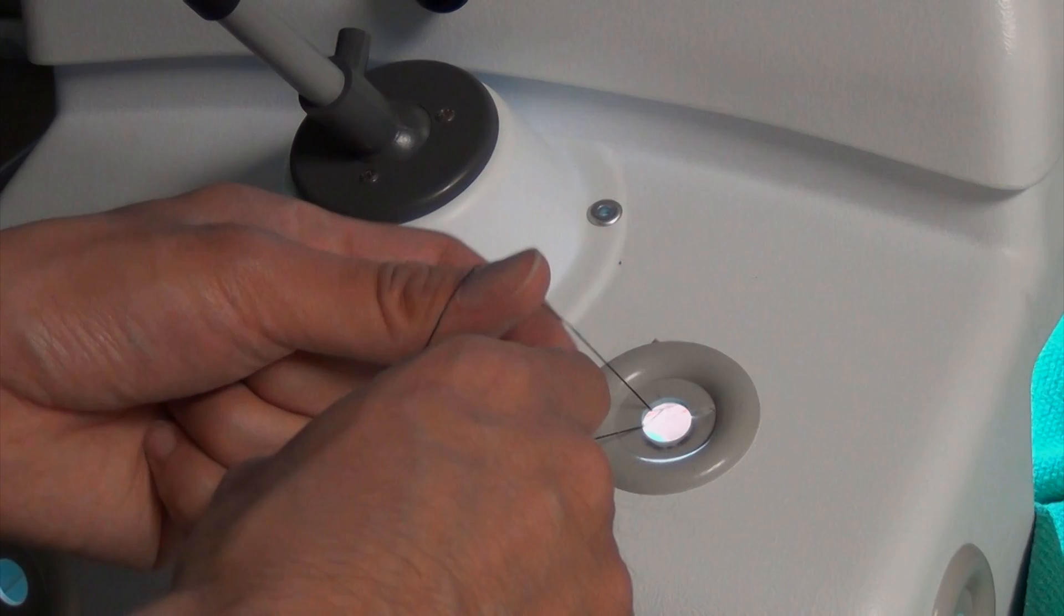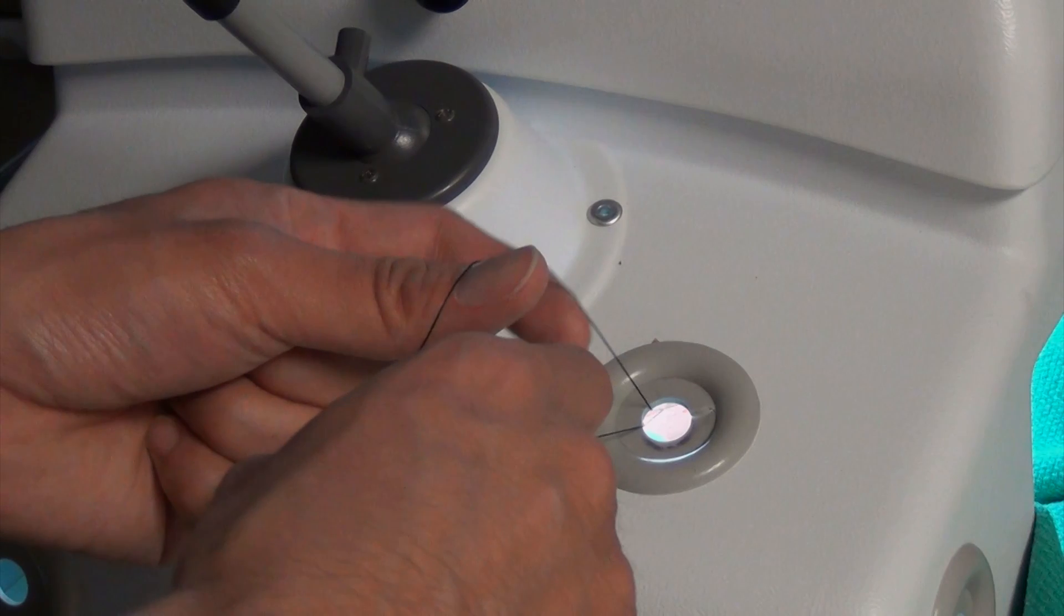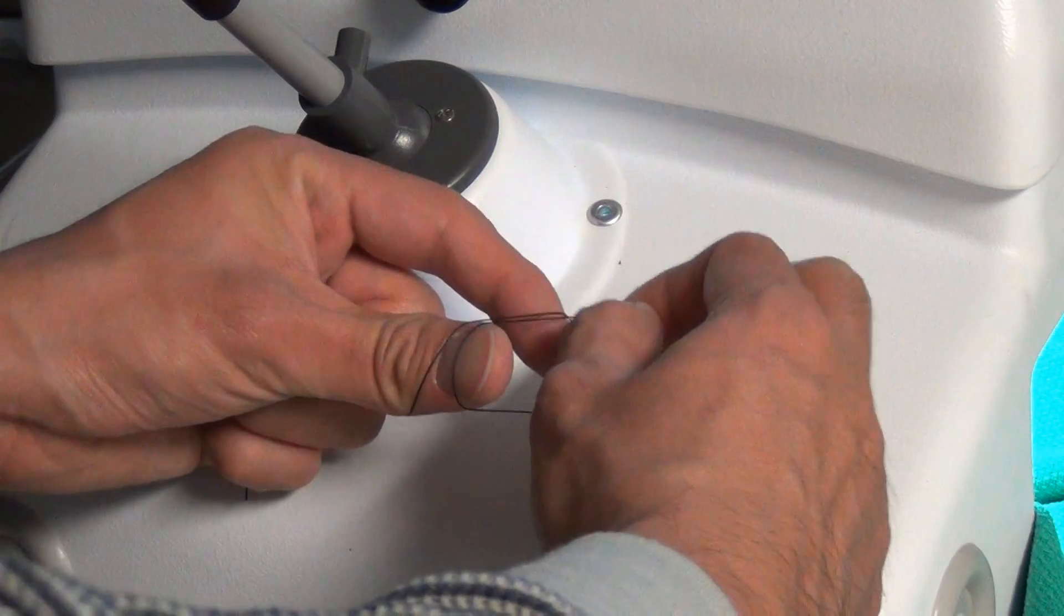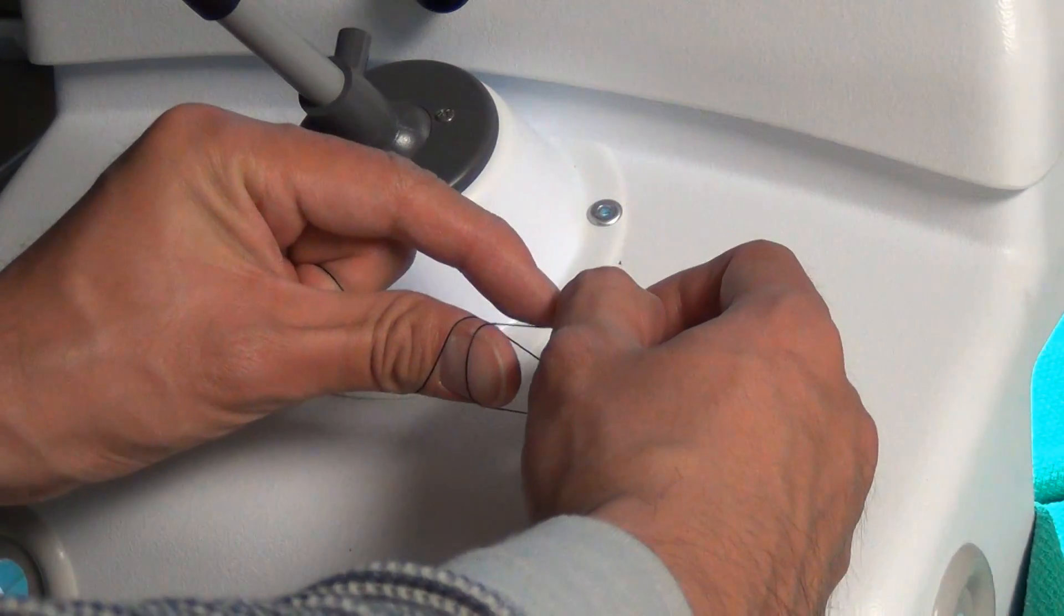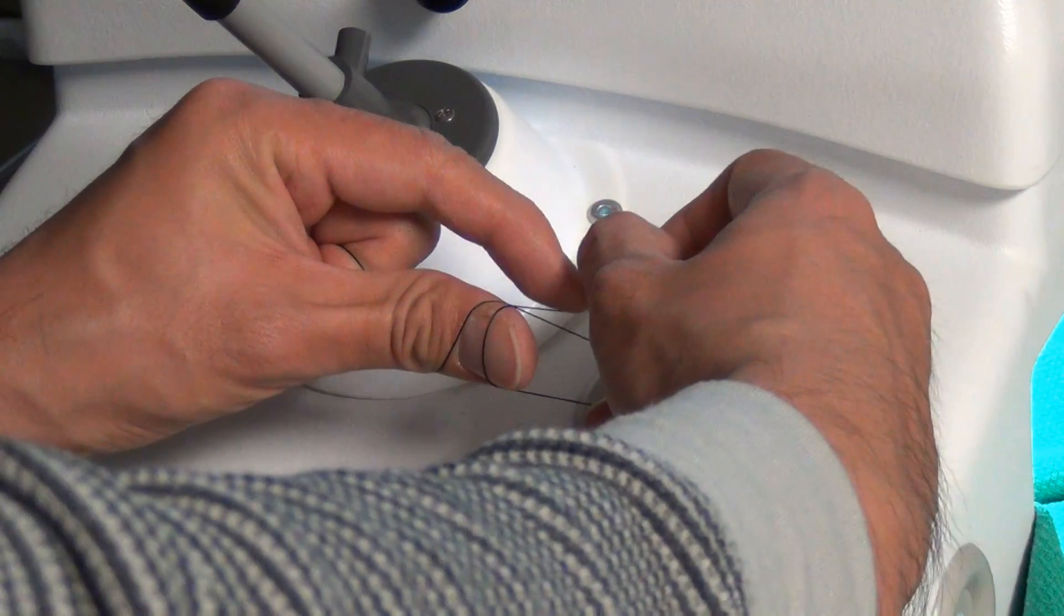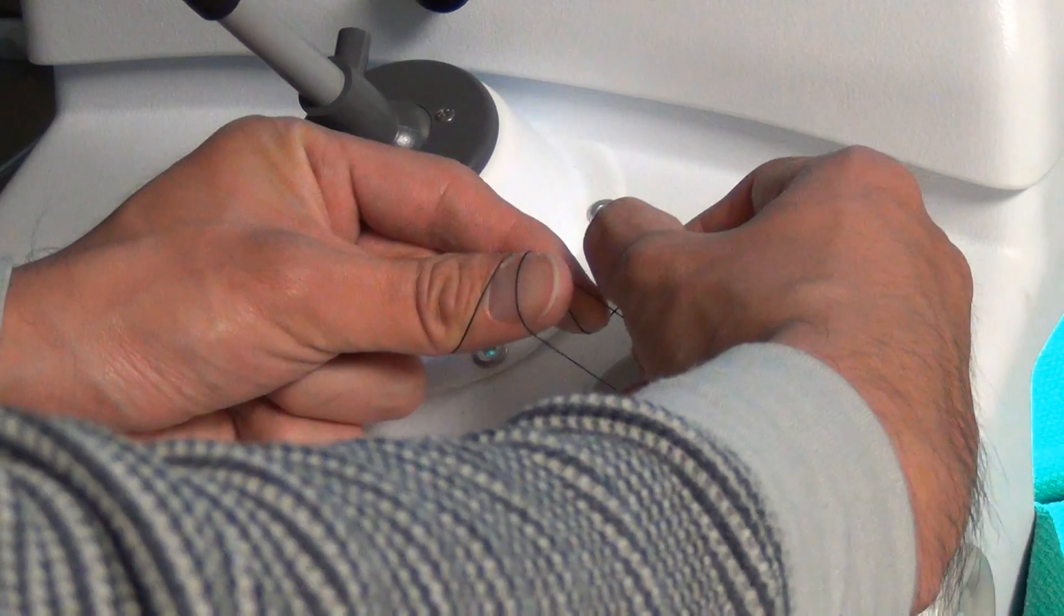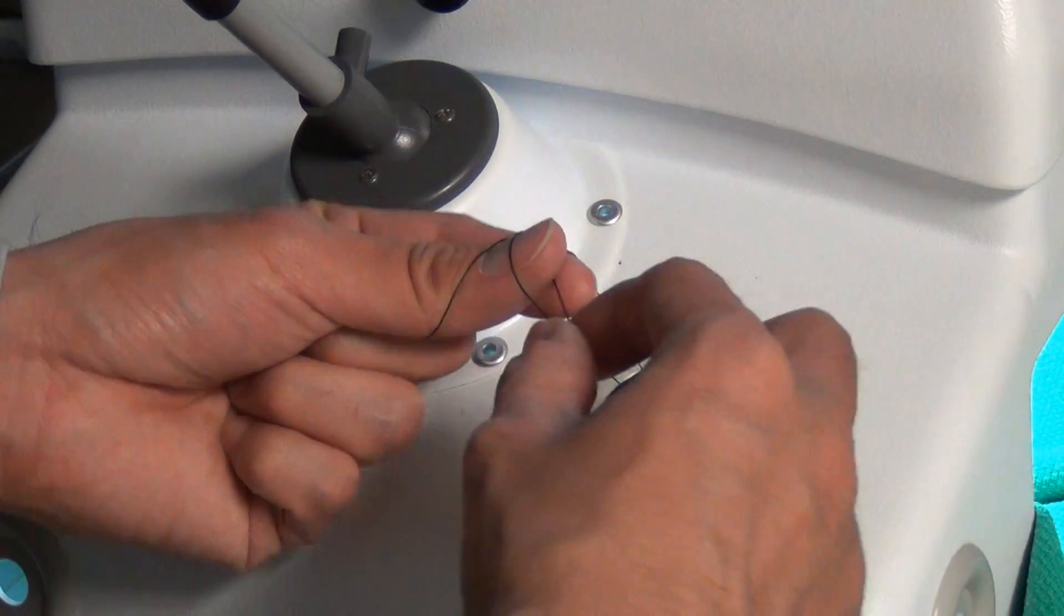Place the needle end of the suture over the thumb. Bring the tail end of the suture from below the thumb and wrap over the thumb. Bring the tail end of the suture lateral and underneath the needle end of the suture.